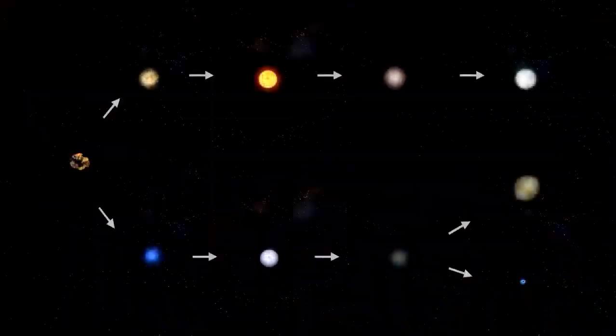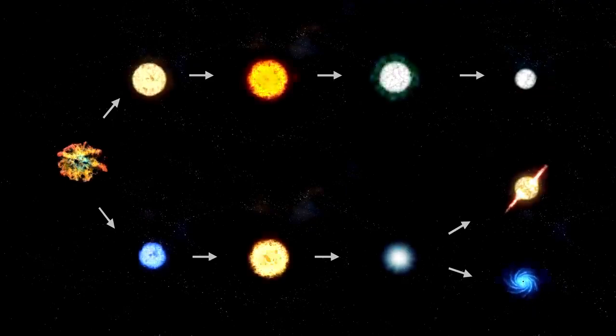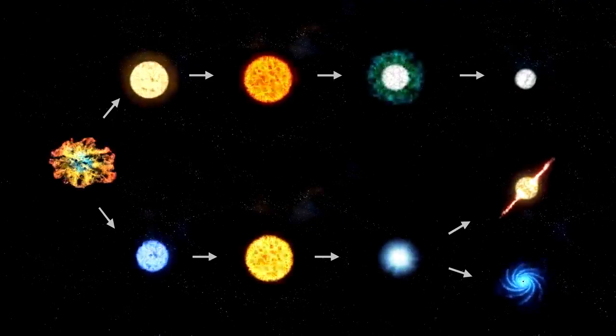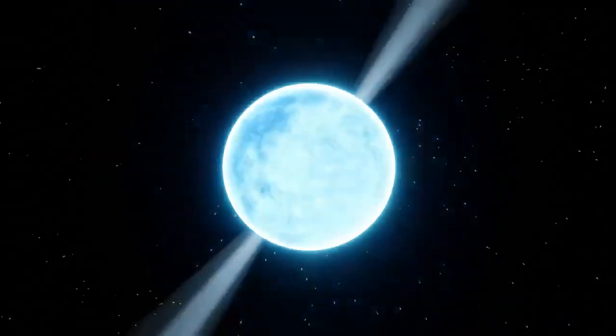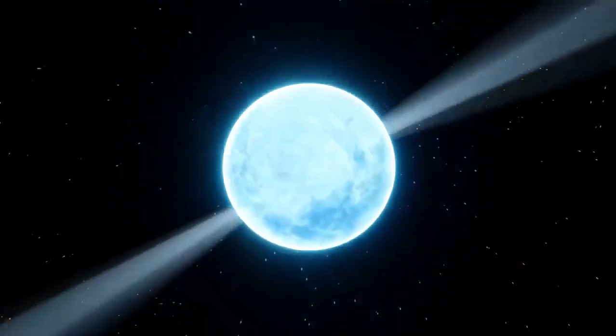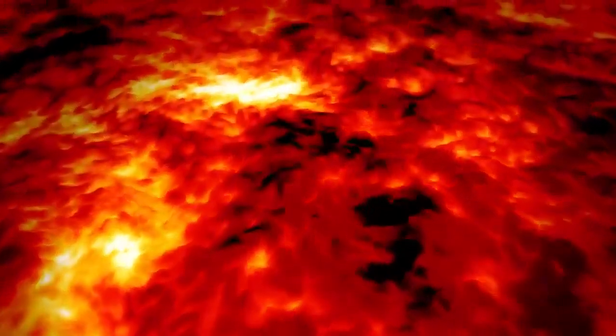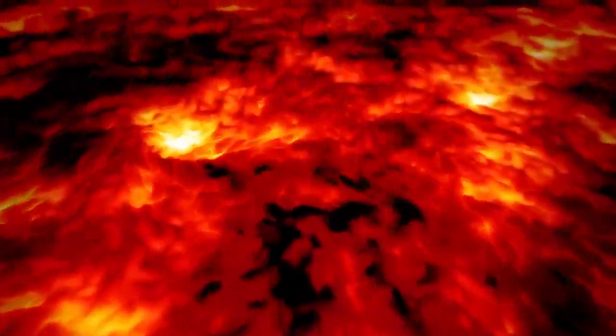One intriguing process within the star is stellar convection, where energy generated in the core rises toward the surface. This movement creates convection currents that transport energy outward, balancing the star's internal processes with its external luminosity. These currents also cause variations in brightness, manifesting as the pulsations observed from Earth.